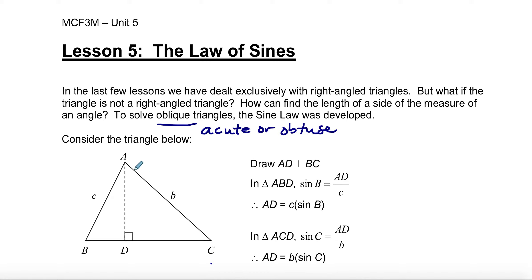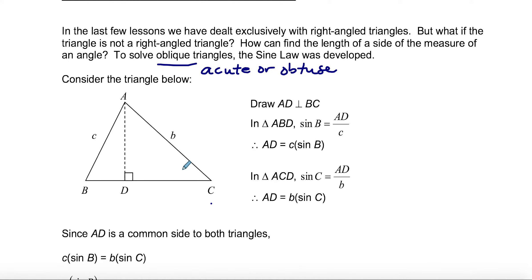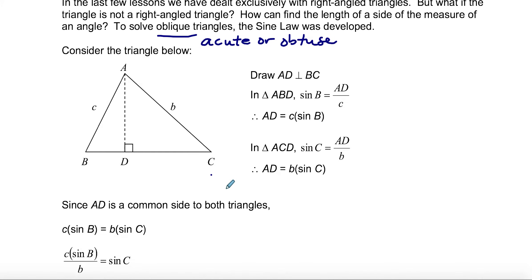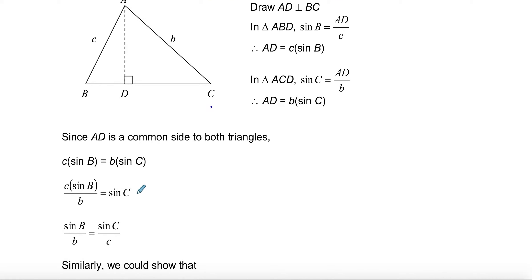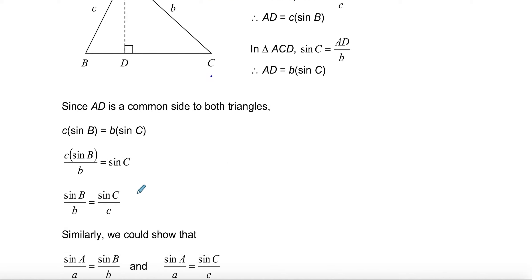The reason the sine law was developed is because when I have this triangle ABC, I don't have a hypotenuse, so we're not able to use the regular trigonometric ratios. The sine law was developed from the ratios by extending A to D and making AD perpendicular to BC. There are some sine ratios here that we could use from angle B and angle C.